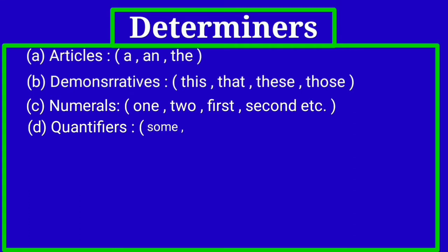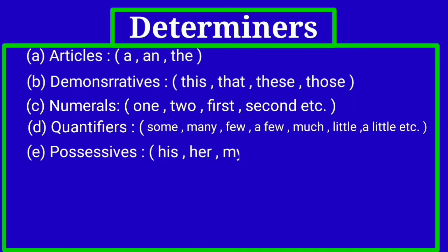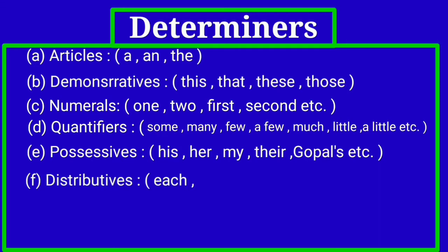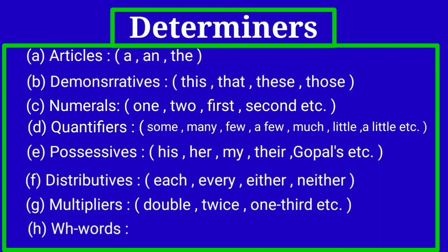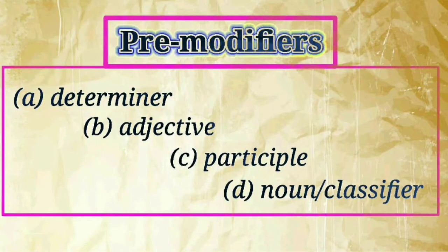Quantifiers denote the quantity of a noun: some, many, few, a few, much, little, a little, etc. Possessives: his, mine, their, etc. Distributives: each, every, either, neither. Multipliers: double, twice, one-third, etc. And wh-words: who, whose, etc. All these pre-modifying classes of words are called determiners. Now let us identify pre-modifiers in the noun phrase from the sentences mentioned one by one.